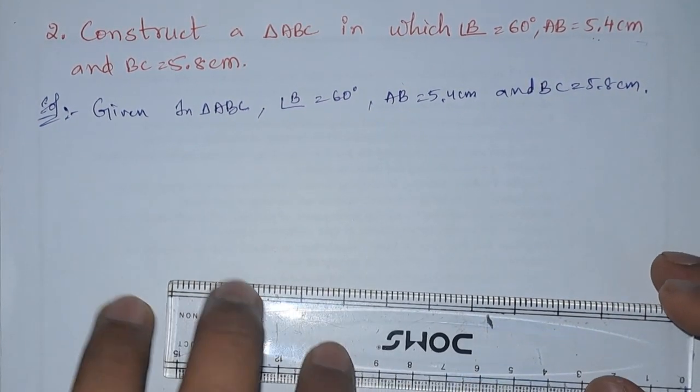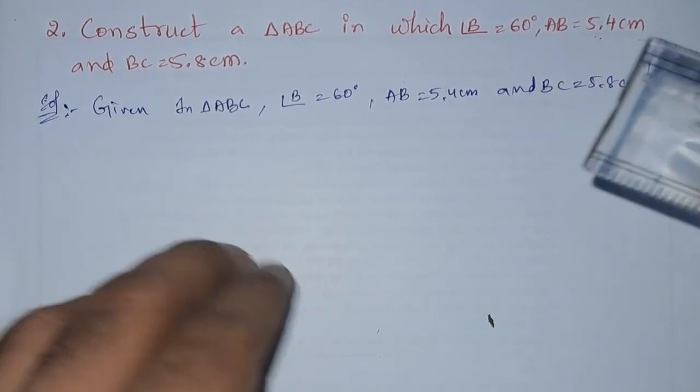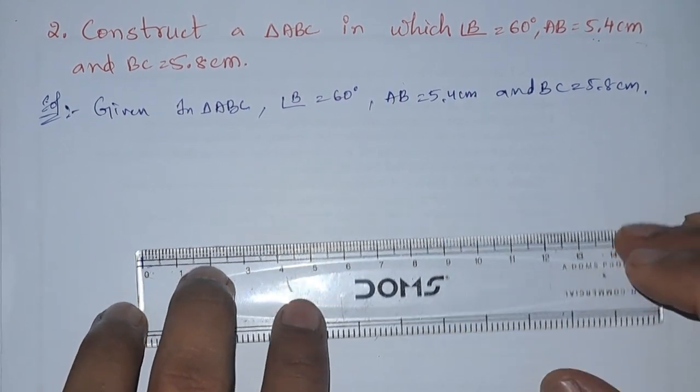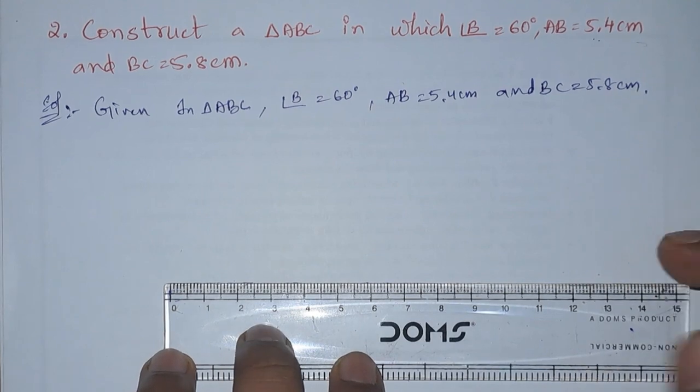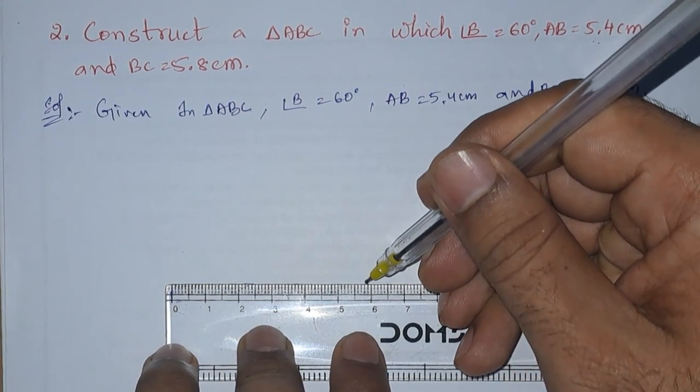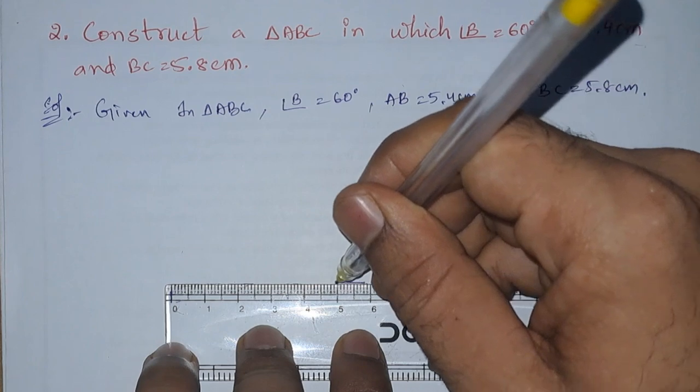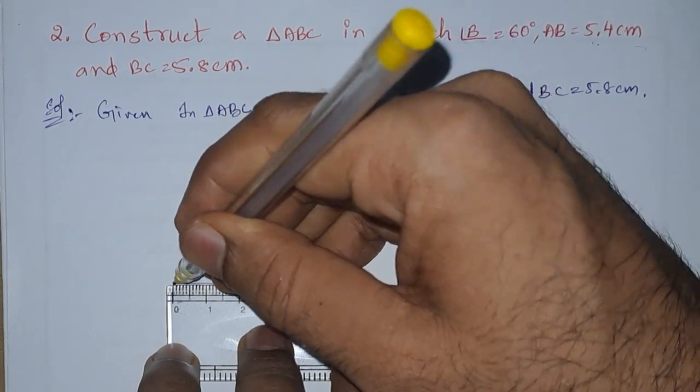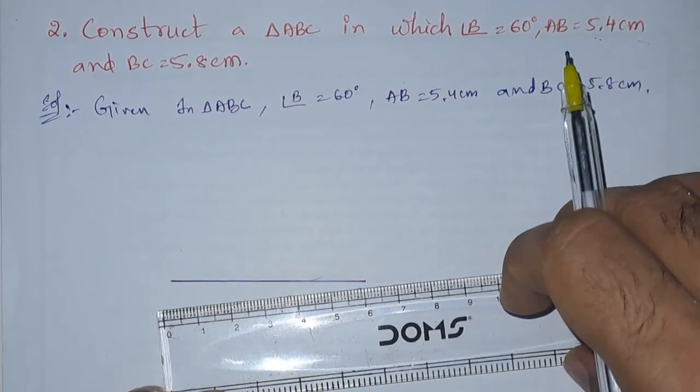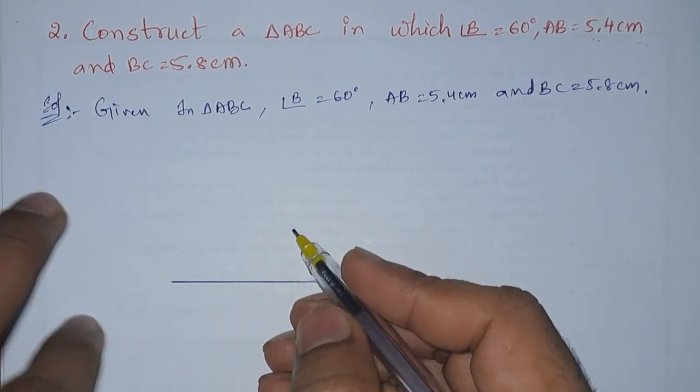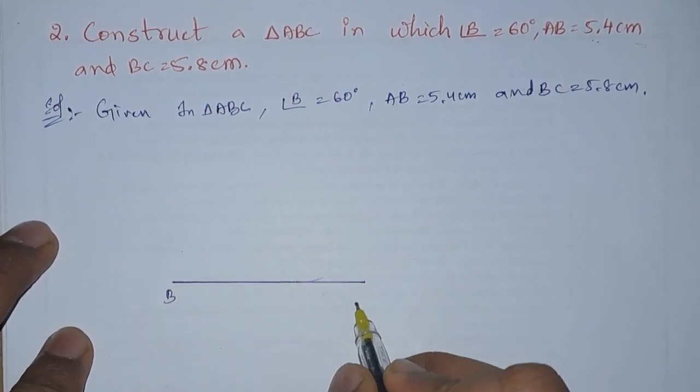The longest side is BC, so let us draw a line 5.8. So here it is, 5.8. Now we got the base, so this is our B and C.